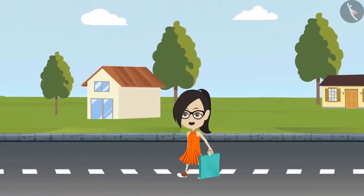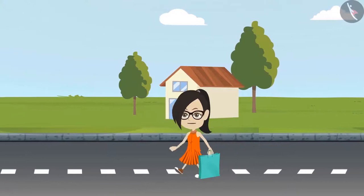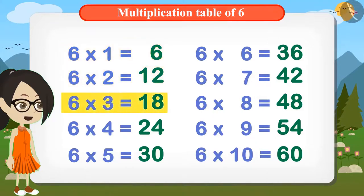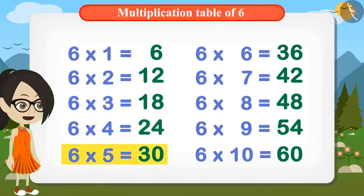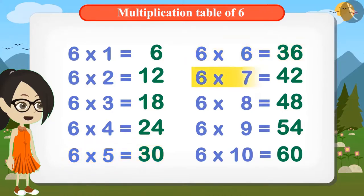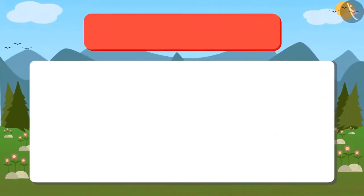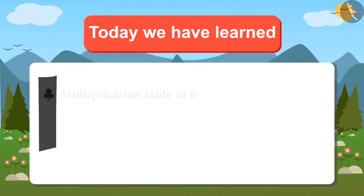Come, let's remember the table of six now. Come on, speak with me: Six ones are six; six twos are twelve; six threes are eighteen; six fours are twenty-four; six fives are thirty; six sixes are thirty-six; six sevens are forty-two; six eights are forty-eight; six nines are fifty-four; six tens are sixty.